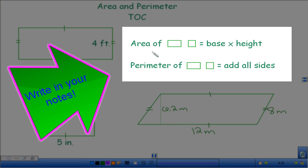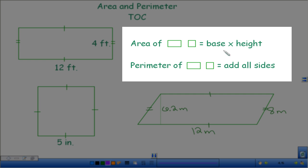All right, area and perimeter. So we talked about on Friday, the area of a rectangle and a square equals base times height, and then the perimeter of a rectangle or square equals add all sides.